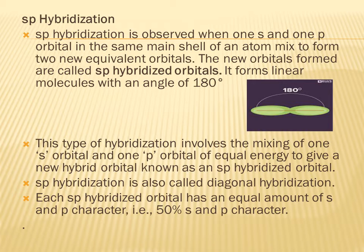First is sp hybridization. sp hybridization is observed when one s and one p orbital in the same main shell of an atom mix to form two new equivalent orbitals called sp hybridized orbitals. It forms linear molecules with an angle of 180 degrees, as shown in the diagram. This hybridization involves mixing of one s orbital and one p orbital of equal energy to give new hybrid orbitals known as sp hybridized orbitals.